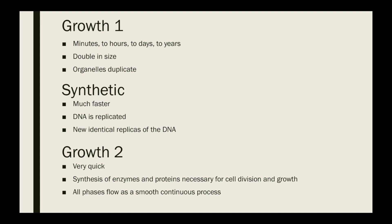Growth phase one typically takes minutes to hours to days to years, depending on the type of cell and how fast that cell needs to get ready to undergo mitosis. During growth phase one, the cell will double in size and organelles duplicate. During the synthetic phase, it's much faster — the DNA is replicated and new identical replicas of the DNA are created.